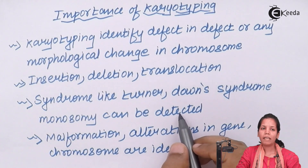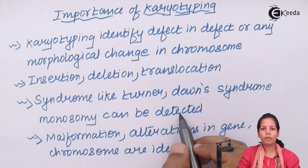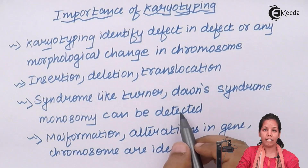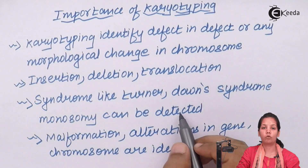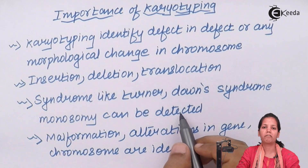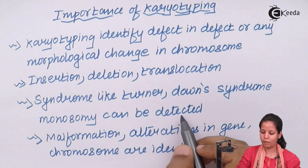Early karyotyping helps to detect and determine to what extent the person can have that syndrome, and also lays down a background of what precautions can be taken for that child in future. This is important since the syndromes not only come with genetic defects but also with many different problems — whether morphological, physiological, or psychological.